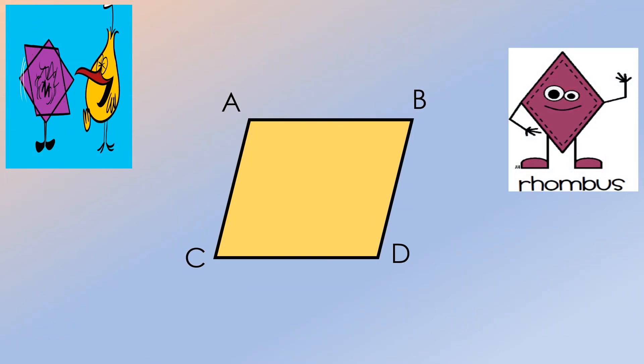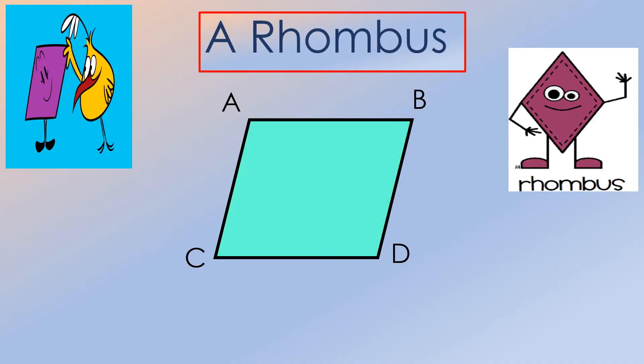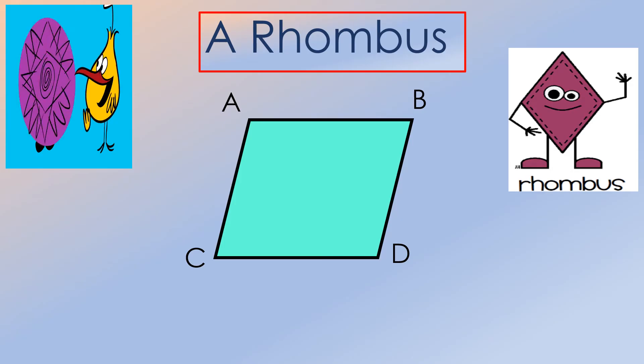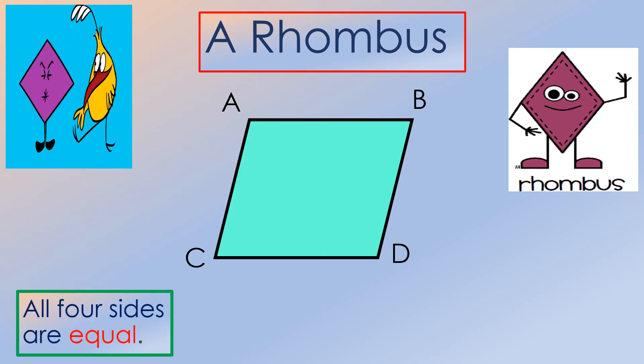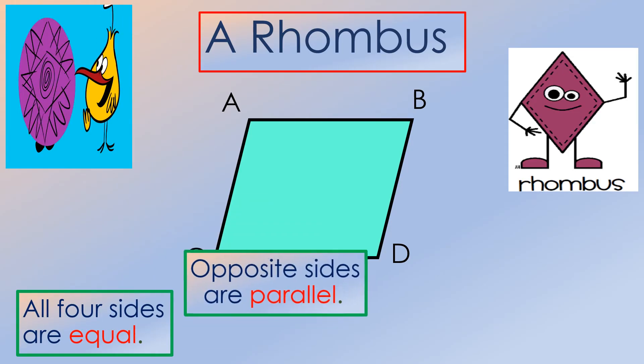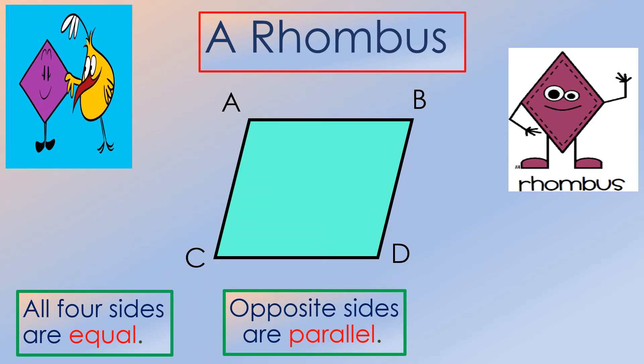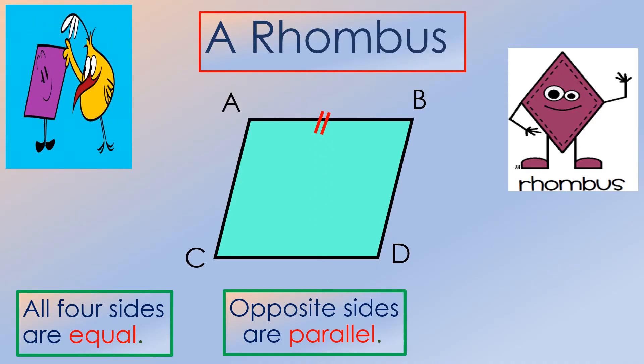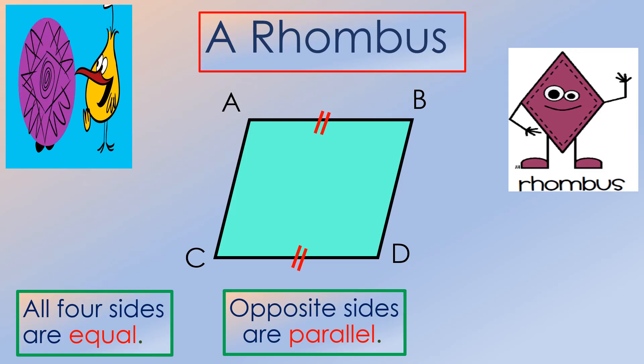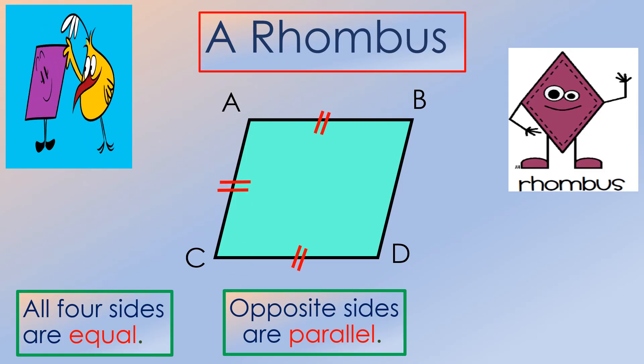Moving on to another type of quadrilateral, which is the rhombus. The rhombus is very similar to a square. Just like a square, all four sides of a rhombus are equal, and the opposite sides are parallel. Notice in this figure that side AB is parallel to side CD. Side AC is also parallel to side BD.